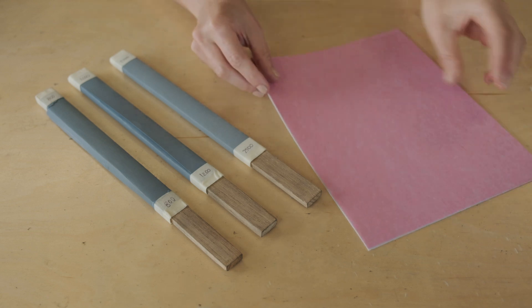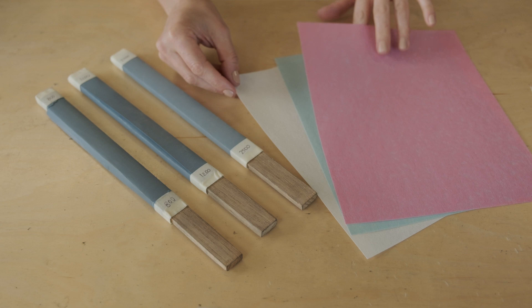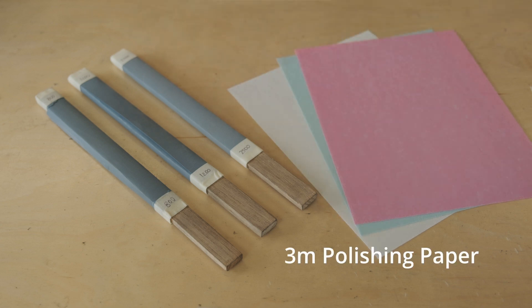Once we've finished sanding, we use this paper, and this paper is made by 3M and it's polishing paper, so we can actually, once we've gone through this process...